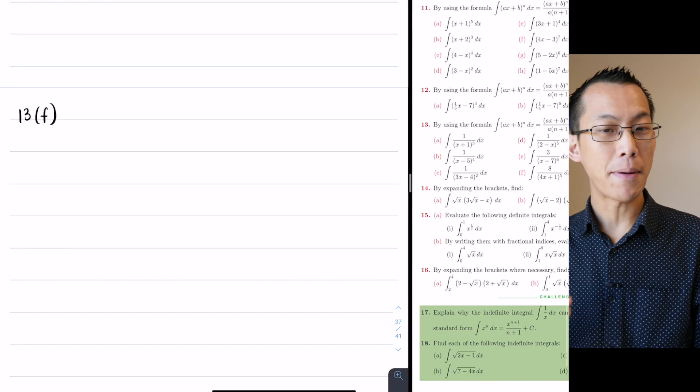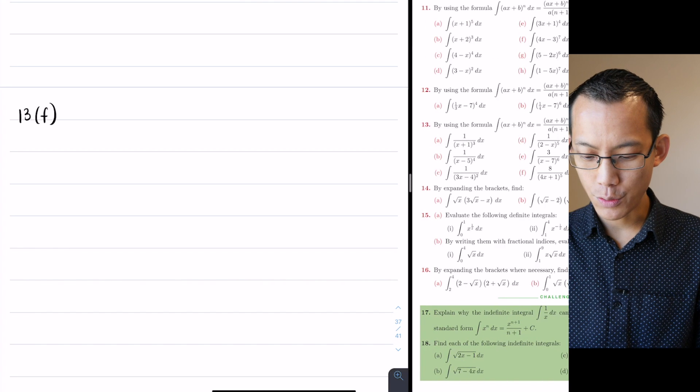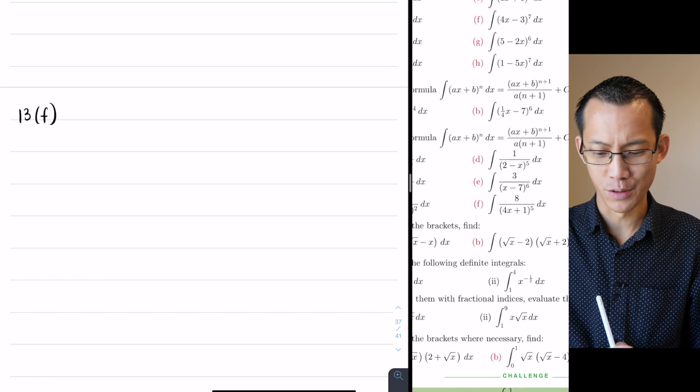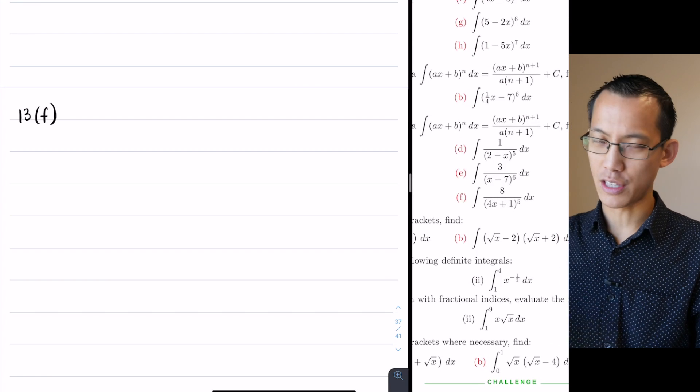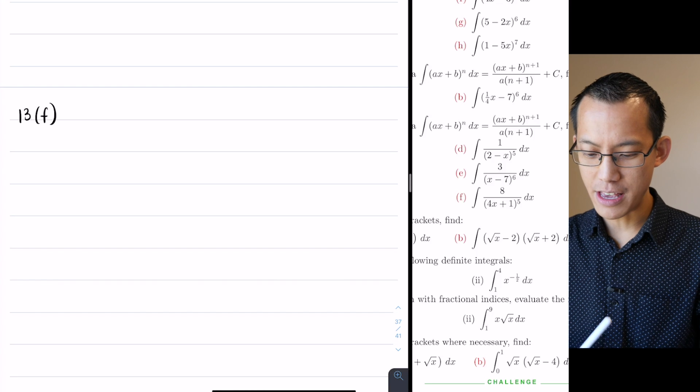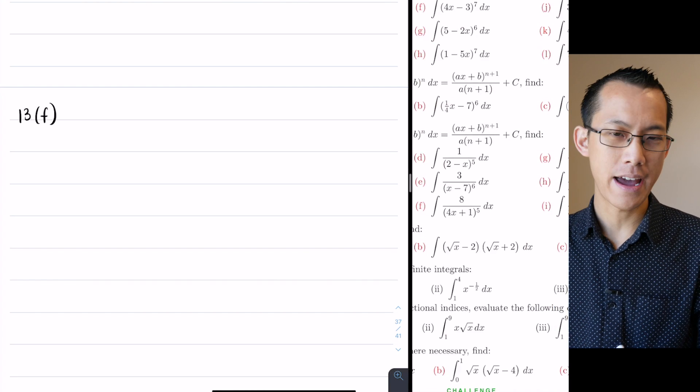13f in the textbook says by using the formula, and then they give you sort of this monstrosity here. If you're integrating something in this exact form (ax + b)ⁿ with respect to x, and then you get all this garbled mess on the right hand side.